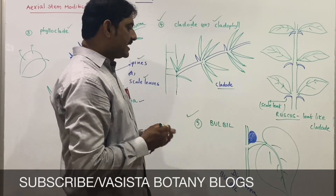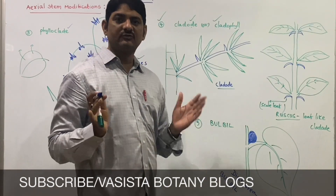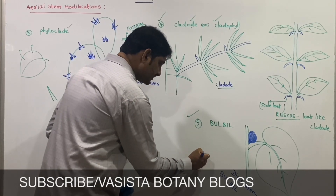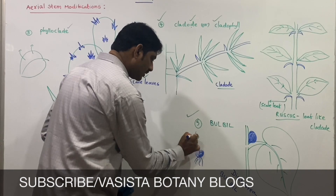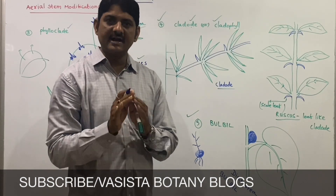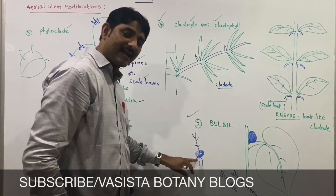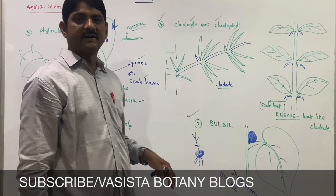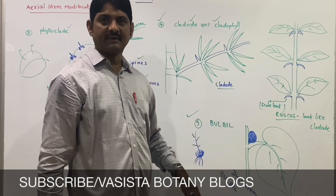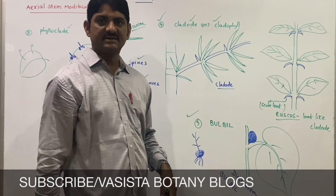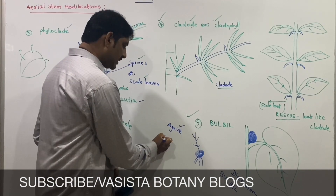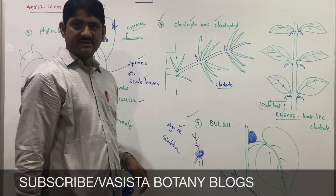The next modification is bulbil. A bulbil is a bud that, when present on the plant, stores food materials. When detached, it can develop roots and grow into a new plant. In Dioscorea, a vegetative bud changes into a bulbil. In Agave globosa, a floral bud changes into a bulbil.